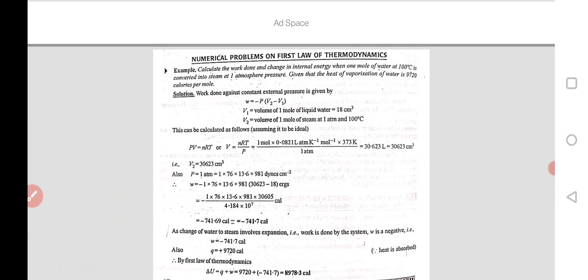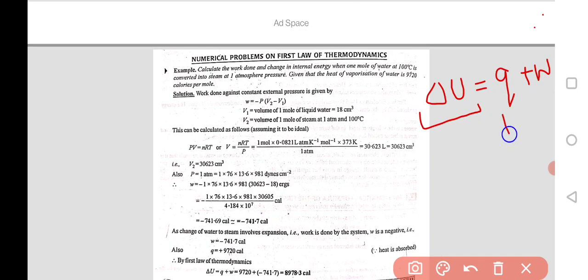So we already discussed about the first law of thermodynamics and keep in mind that when you solve numerical problems you have to know the basic formula which is delta U is equal to small q plus small w. This is the change in internal energy, this is heat and this is work.